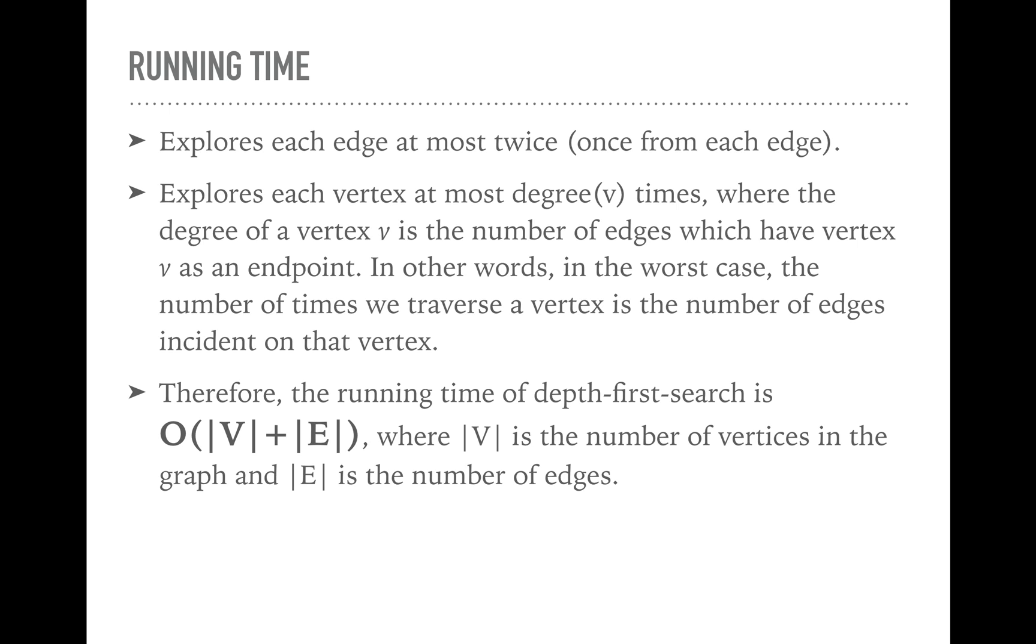We'll explore each vertex at most degree(V) times, where the degree of a vertex V is the number of edges which have vertex V as an endpoint. In other words, in the worst case, the number of times we traverse a vertex is the number of edges incident on that vertex. The only way we get to a vertex is through an edge. So the number of times that we can traverse a vertex is the number of edges that are connected to it.